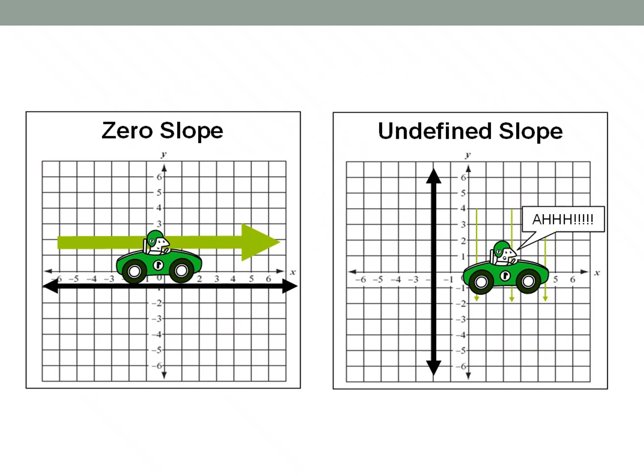Now zero slope and undefined slope, people always kind of forget which one's which. So here's just a little friendly reminder. Zero slope is like it's not really difficult to kind of drive on. Whereas an undefined slope, your car would fall right out. I always find that helpful, so I hope you do too.